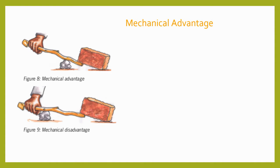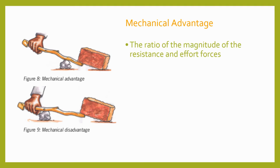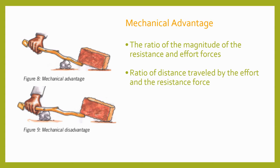As we've seen, simple machines are used to provide a mechanical advantage. By configuring the simple machine in different ways we can change the mechanical advantage they provide. An easy example is with a lever. When the effort force is closer to the fulcrum than the resistance force the mechanical advantage is low — the amount of force needed to lift the load will be greater but the force will be applied over a shorter distance. By moving the effort force further from the fulcrum than the resistance we create a higher mechanical advantage, so less force is required to lift the load but the force must be applied over a greater distance.